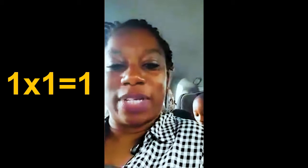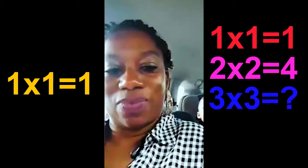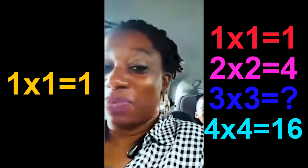5 times 5 is 20. No — 5 times 5 is 20? 6 times 6 is 26. 7 times 1 is 7. But what's 3 times 3?